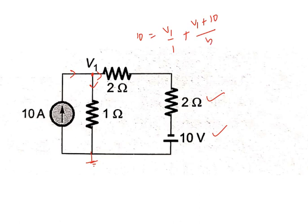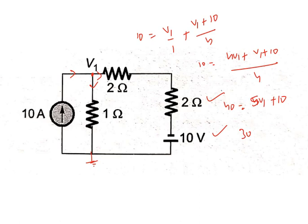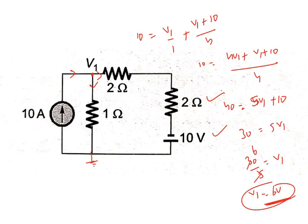Simplifying: 10 = (4·V1 + V1 + 10) / 4, so 40 = 5·V1 + 10, therefore 5·V1 = 30, giving V1 = 6 volts. So V1 equal to 6 volts is the required voltage — the voltage across that 1 ohm resistance, which is V1.